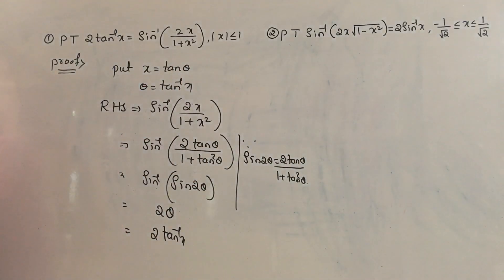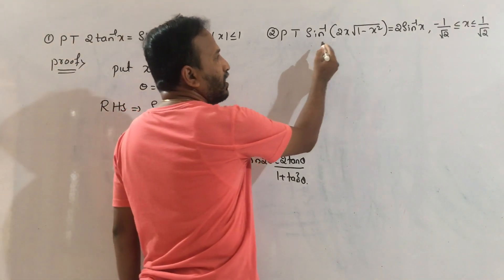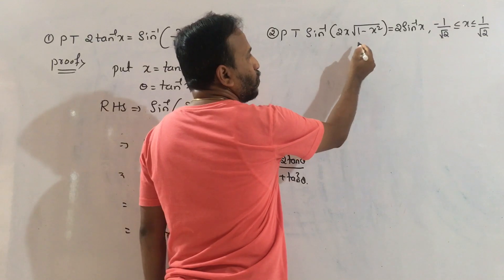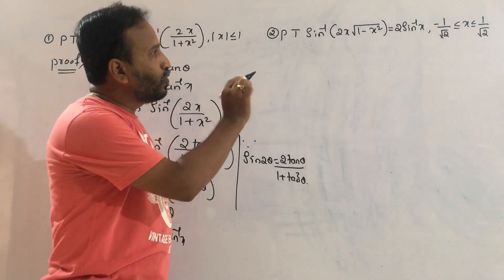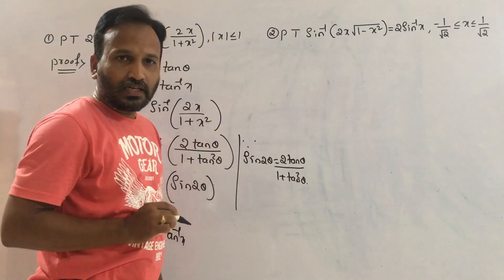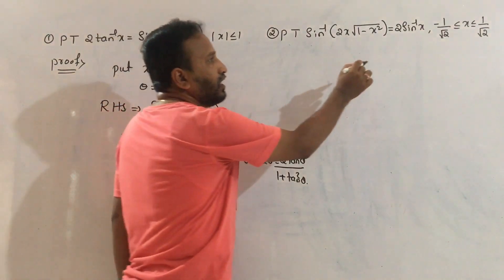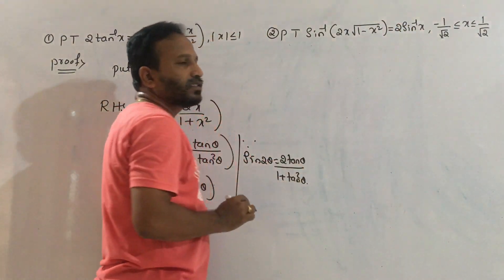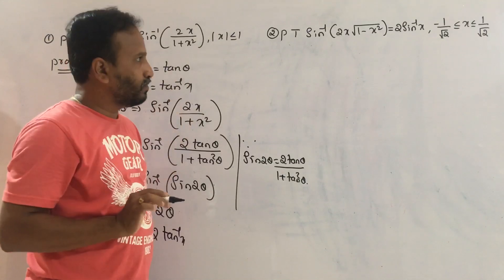Second property: prove that sin inverse of 2x root of 1 minus x squared equal to 2 sin inverse x, where minus 1 by root 2 less than or equal to x less than or equal to 1 by root 2.